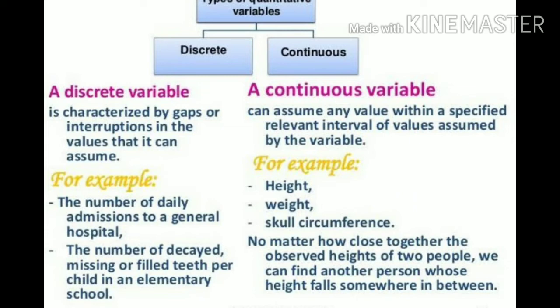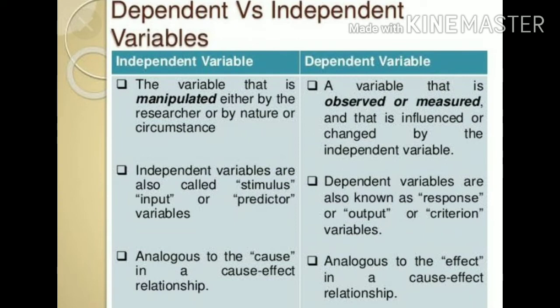Continuous variable — from the word itself, it is clear that it can be expressed continuously. For example, weight. The next one is discrete variable, also called non-continuous variable. These are variables which can only be expressed as a whole number, like the number of students. Next, the dependent variable is the variable which is under the influence of another variable or which is affected by another variable in the system. The independent variable is not influenced by other variables and can stay as independent.